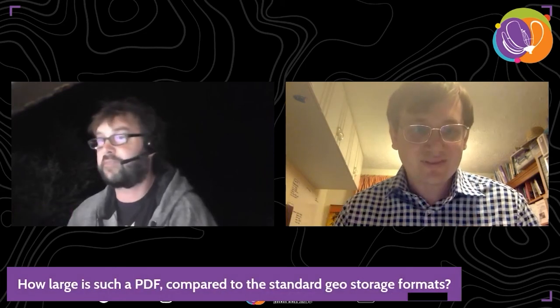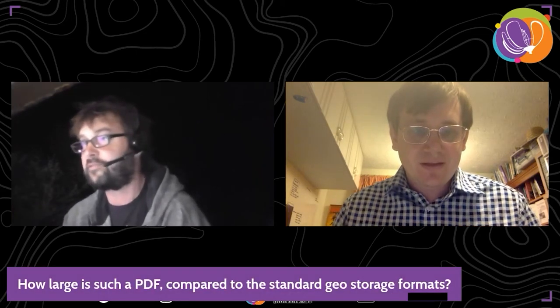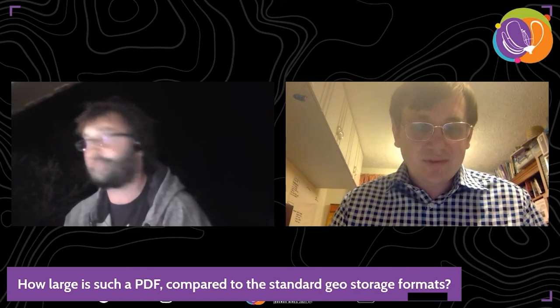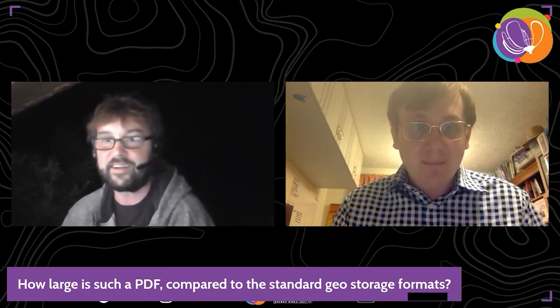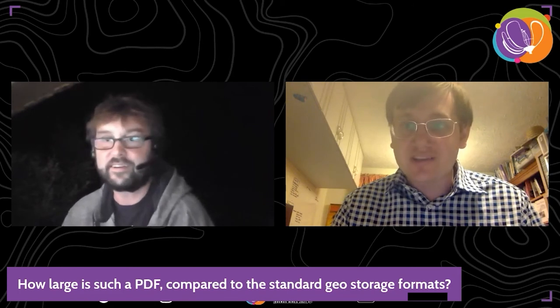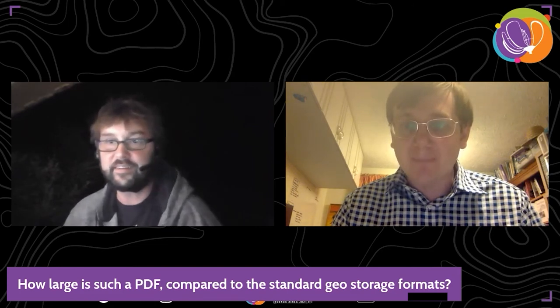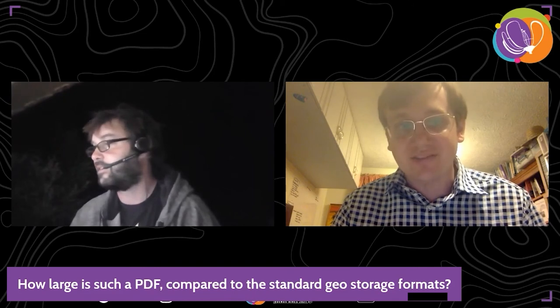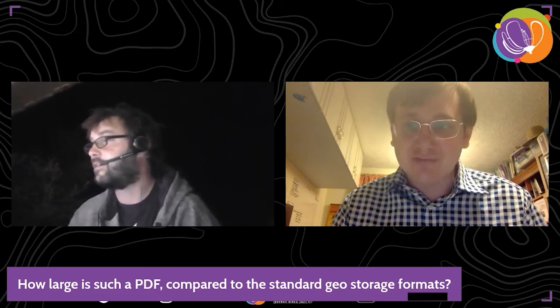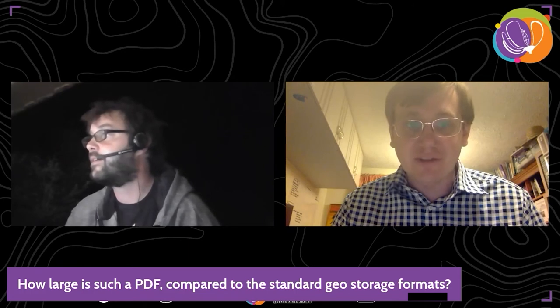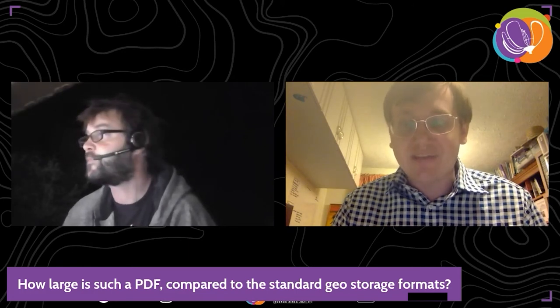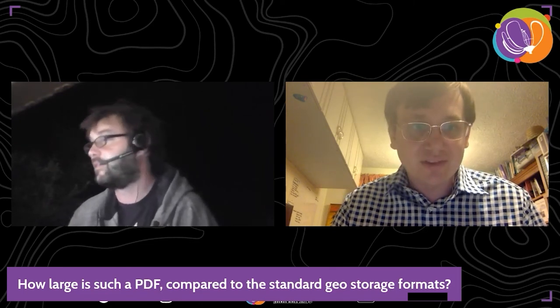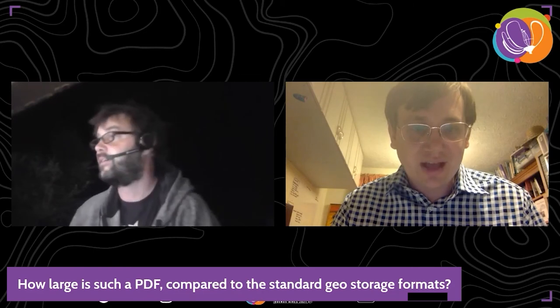The first question: how large is a Geo PDF compared to standard geospatial storage formats? Not massively larger. This FOSS4G example of airfields in the New Forest was 1.5 megabytes. I've just exported the same example without the Geo PDF option and the file size is pretty much the same — 1.5 megabytes for both. I'm sure if you put a lot of vector data in across many layers it will balloon somewhat, but it shouldn't be a massive problem.